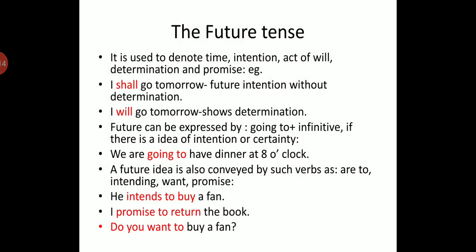Future can also be expressed by 'going to' plus infinitive when there is an idea of intention or certainty — for example, 'We are going to have dinner at two o'clock.' A future idea is also conveyed by verbs like 'intend,' 'want,' and 'promise.' For example, 'He intends to buy a fan,' 'I promise to return the book,' or 'Do you want to buy a fan?' — all three convey a future intention.